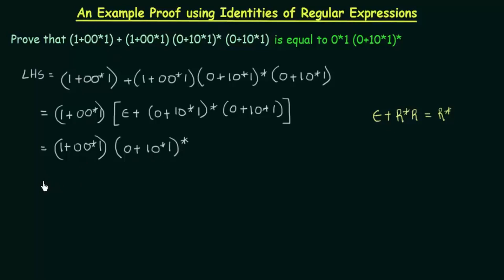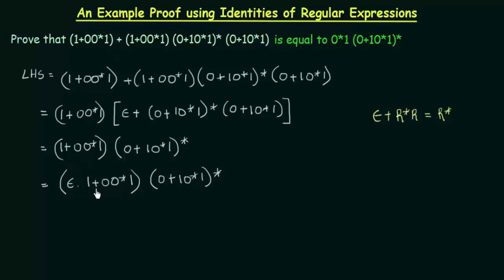So we write: (1 + 0·0*·1) · (0 + 1·0*·1)*. Now I will rewrite the first factor as ε·(1 + 0·0*·1), because the identity ε·r = r means adding epsilon before any expression does not change it. This allows us to prepare for the next factoring step.